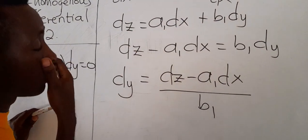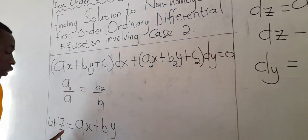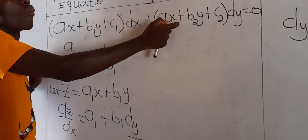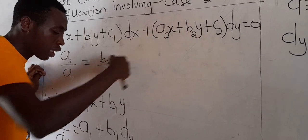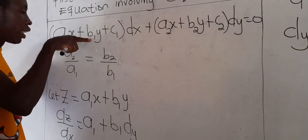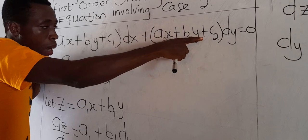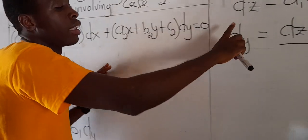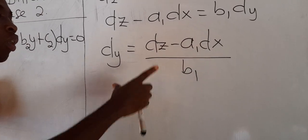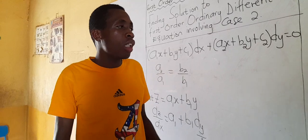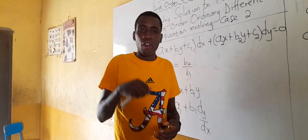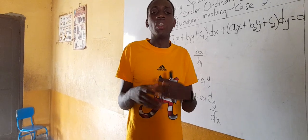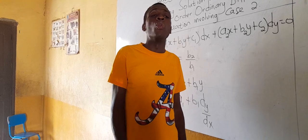Now you substitute. First substitute z in place of a1 dx plus b1 y in the original equation. Remember there will be a common factor between a2 and b2 — factor that out and a1 dx plus b1 dy will appear. Let z equal that expression. Then substitute dy with the expression derived. The equation will become separable. Separate it, integrate, and back-substitute z to get your solution.